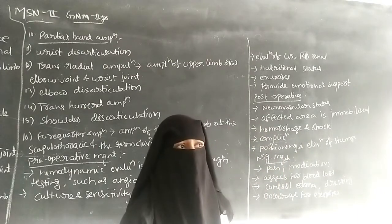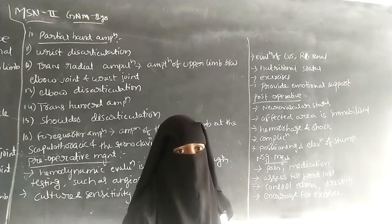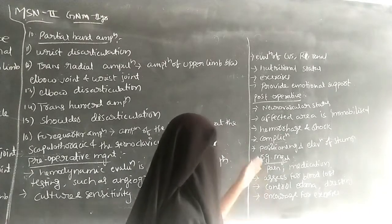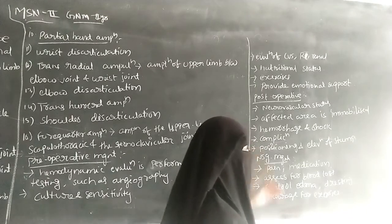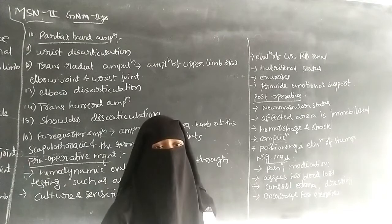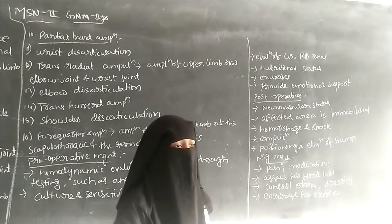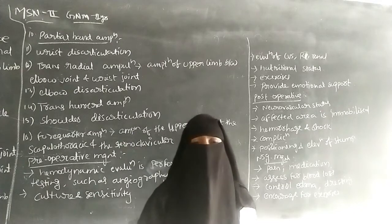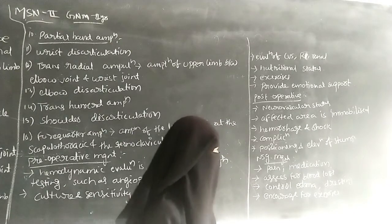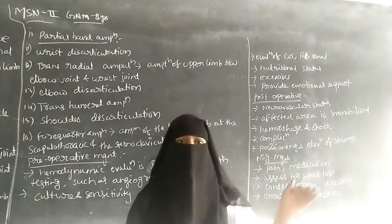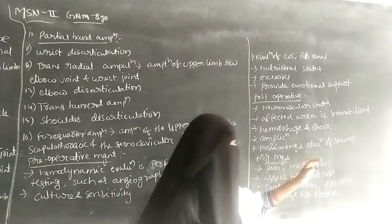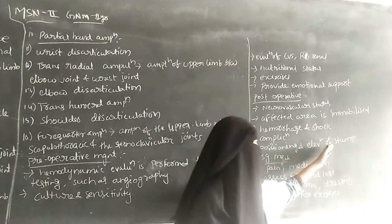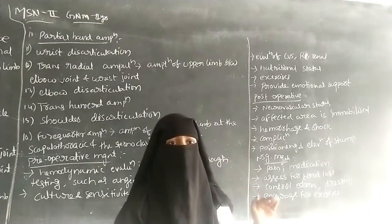The nurse must assess for complications like hemorrhage — bleeding at the surgical site — and shock, which may occur due to severe blood loss, causing decreased oxygen or blood flow to organs. Positioning is very important after surgery for 24 to 48 hours. The stump — the remaining part after cutting of the limb — should be elevated for 24 to 48 hours post-surgery.